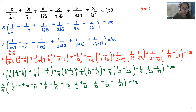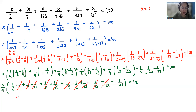Here, 1/3 minus 1/7 plus 1/7 eliminates, minus 1/11 plus 1/11 eliminates, similarly minus plus 1/15, minus plus 1/19, minus plus 1/23 all eliminate. So what is left is x/4 times (1/3 - 1/27), which equals 100.